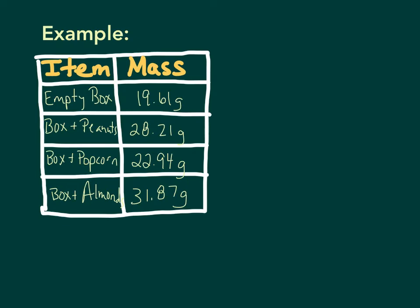Here's a little example of things that are a little bit bigger that we can see. But we can find the relative mass of these things also, how they're related to each other. That's what relative mass is. I have an empty box, and the box mass is 19.61 grams. And then that same box with peanuts is 28.21, popcorn 22.94, and almonds is 31.87.